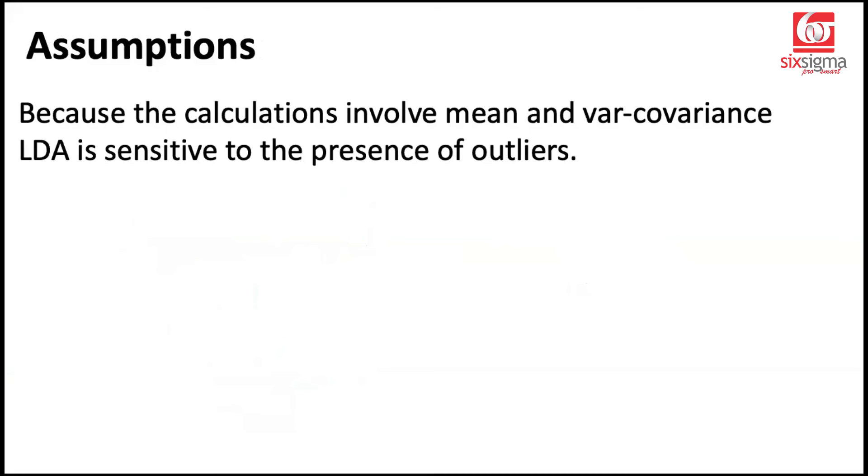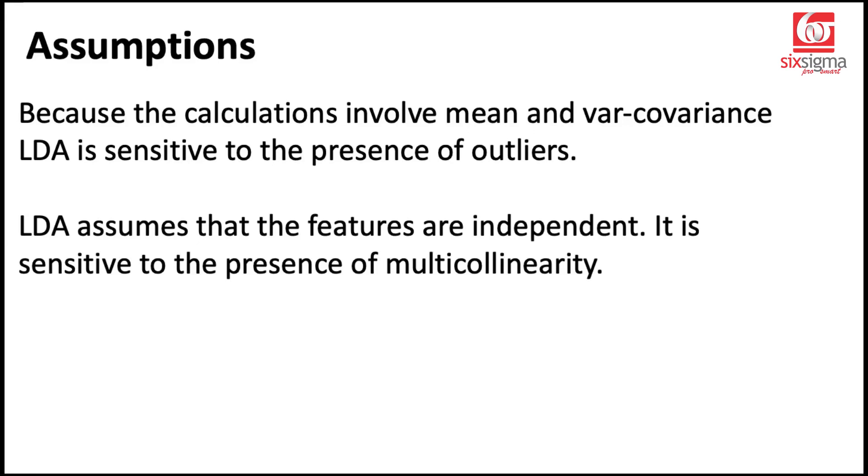Now, as I said, linear discriminant analysis belongs to the family of statistical models, like linear regression and logistic regression. So statistical models in general tend to be a little heavy on assumptions. What are the assumptions involved? First of all, we are using means and standard deviations here. In fact, we are also using variance-covariance matrix. That's the math part of the linear discriminant analysis. Therefore, linear discriminant analysis is sensitive to the presence of outliers. If you have outliers present, it may not give you the best classification. Second point, linear discriminant analysis assumes that the features are independent. Explanatory variables are independent of each other. Thus, it is also sensitive to the presence of multicollinearity.